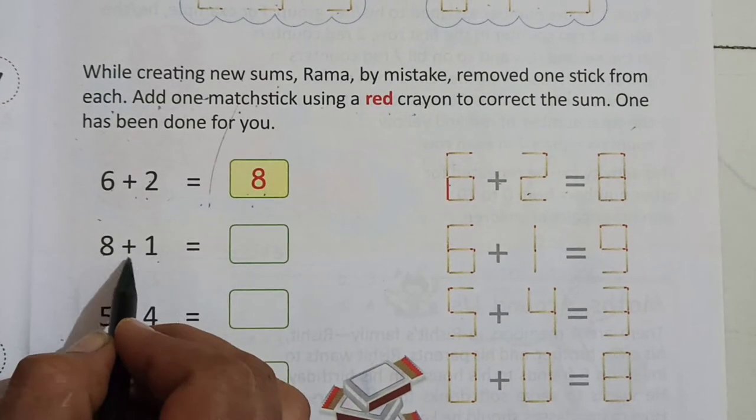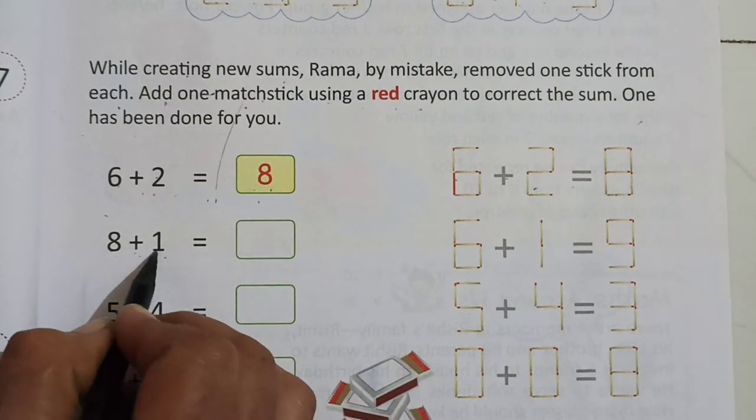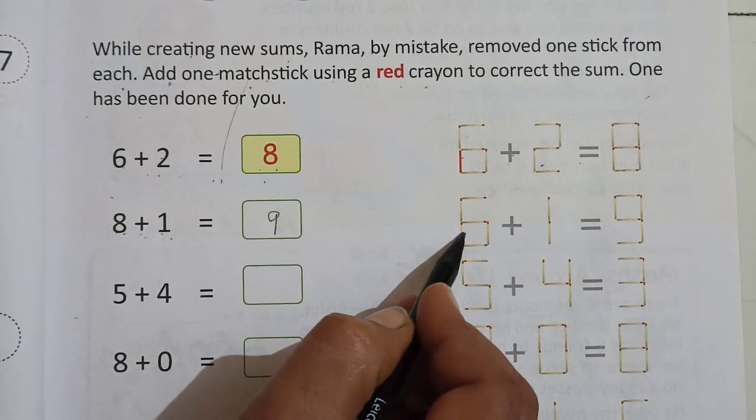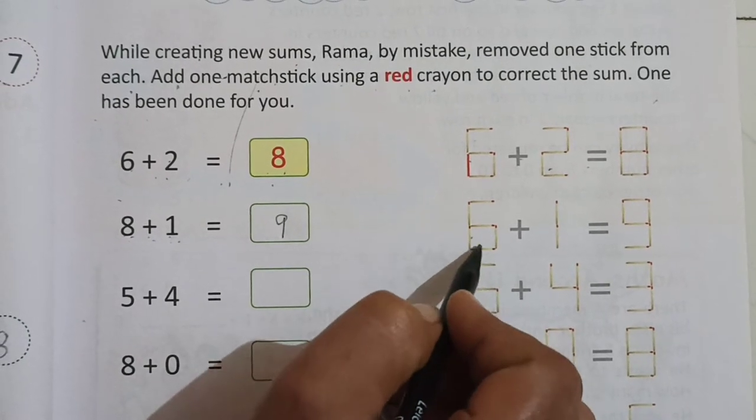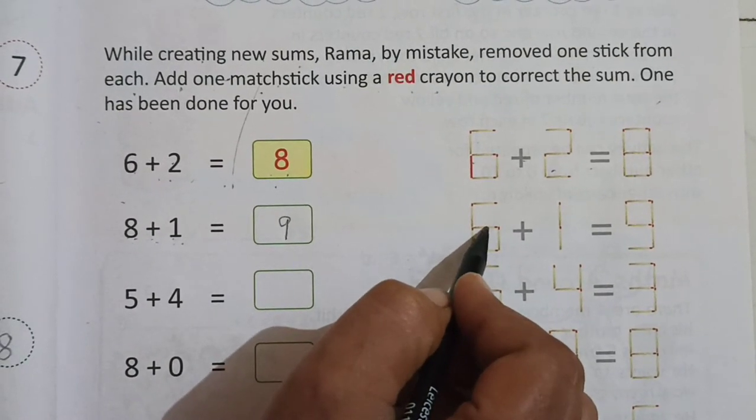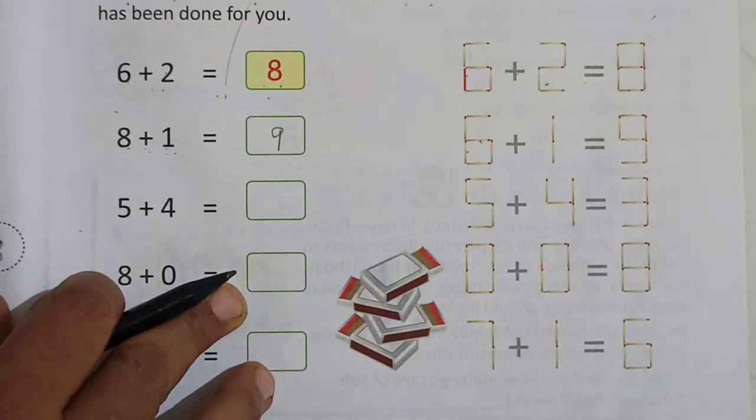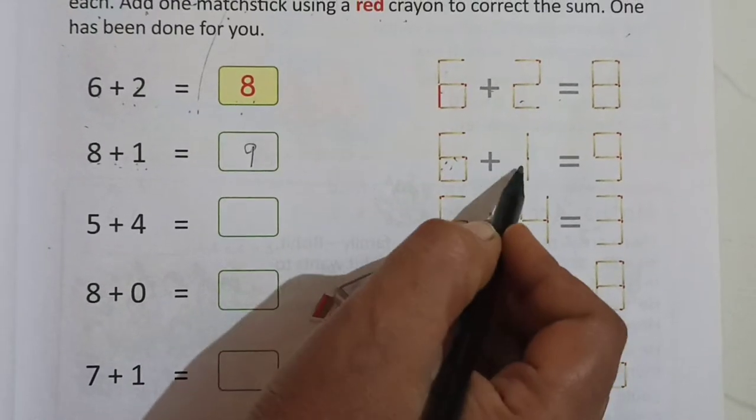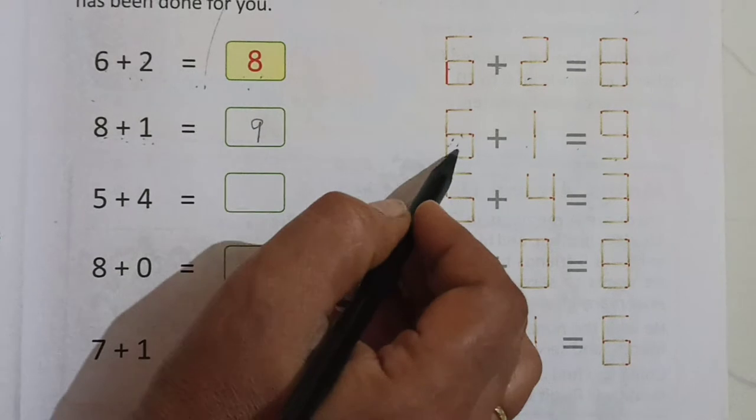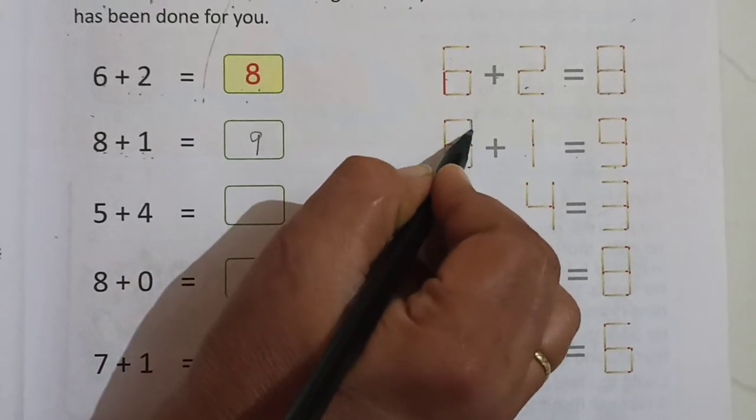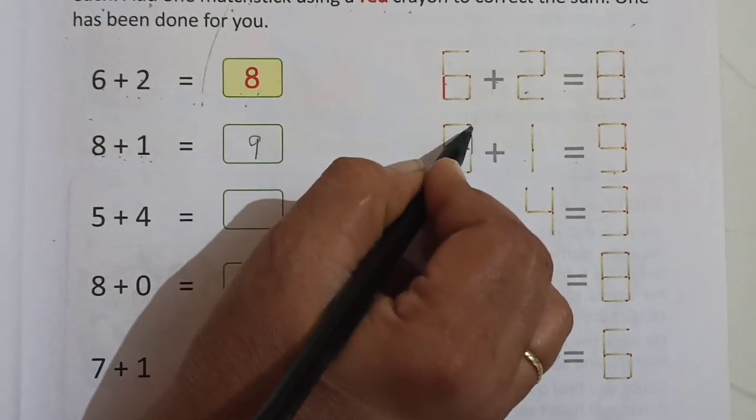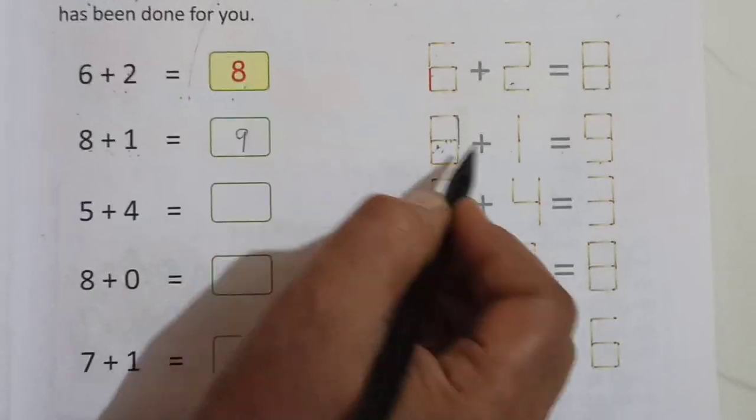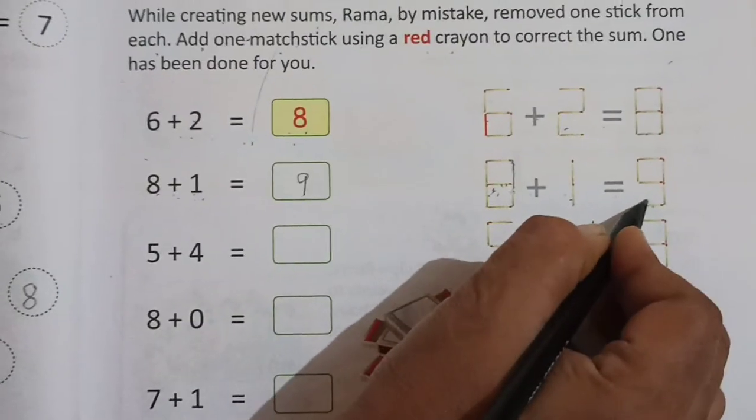Now 8 plus 1. Tell me children, 8 plus 1, after 8 one means 9. So here we have to make 8. But here she removed one matchstick from here. 8 plus 1 is equal to 9, but here is 6. So we have to draw here one matchstick with the help of red crayon. So 8 plus 1 is equal to 9.